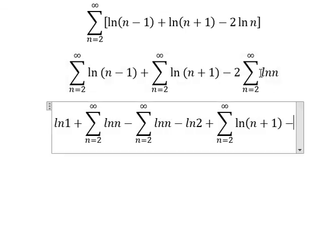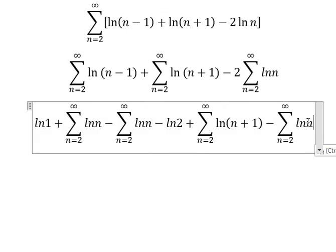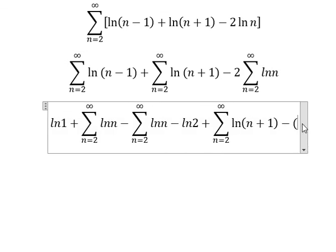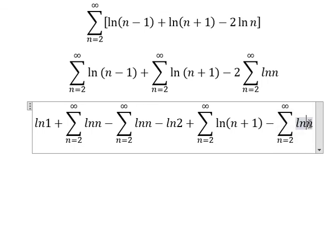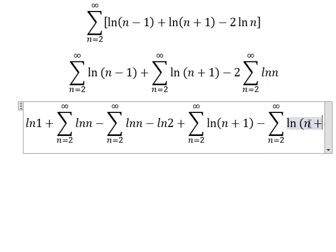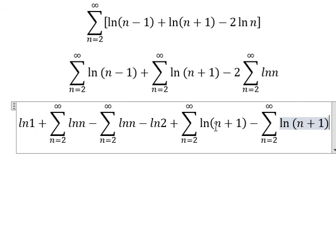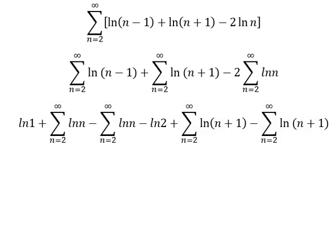Because we just put one term of this series outside, this one cancels this one, this one cancels this one. Now we just have only ln 1 minus ln 2. We know that ln 1 is 0.